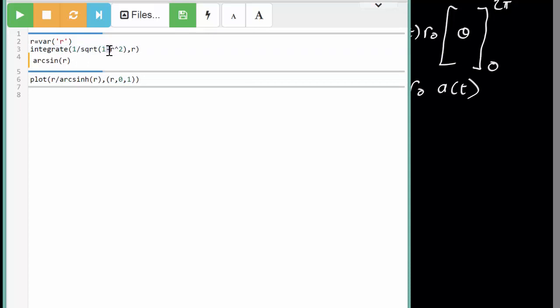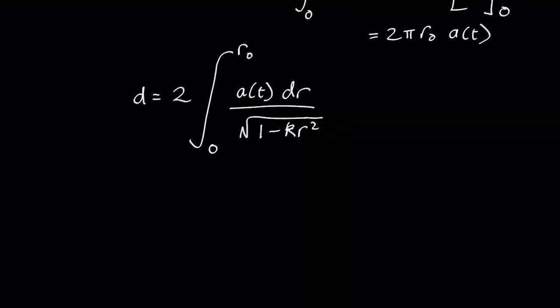We could also work out what the situation would be if it was a positive value. So k was minus 1 that means it's going to be 1 over the square root of 1 plus r squared and in this case it comes out as the arc hyperbolic sine. If it was some other constant let's say it was 0.003 times this, all that does is change the constant so you get a constant here and a constant inside there. So what we found out is that the diameter is going to be 2a of t and it's either going to be the arc sine of r0 if k equals 1 or the arc hyperbolic sine r0 if k equals minus 1 or different constants on these otherwise.